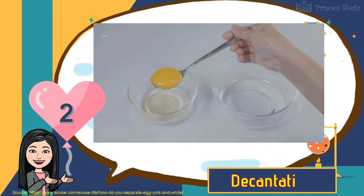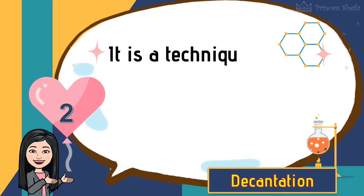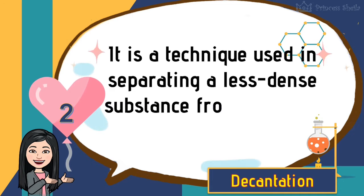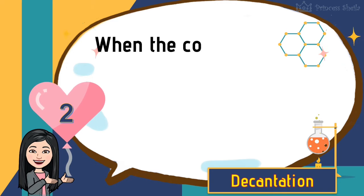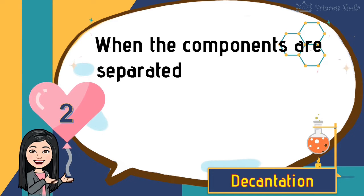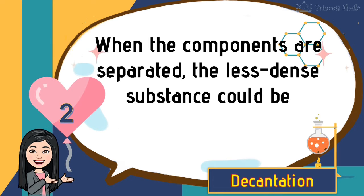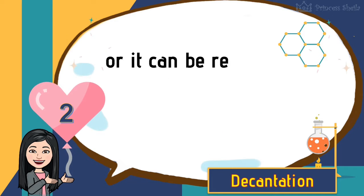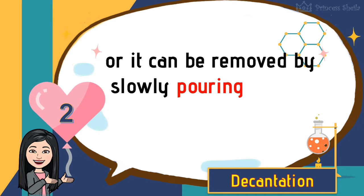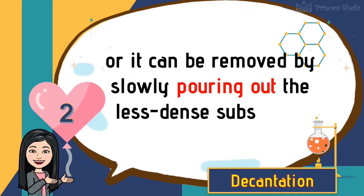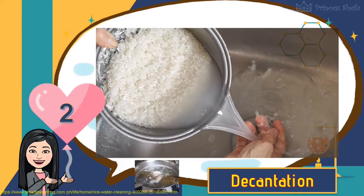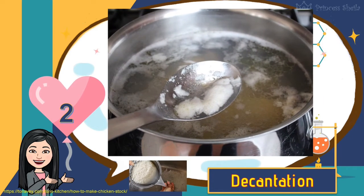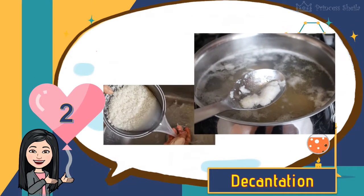Second is decantation. It is a technique used in separating a less dense substance from a denser one. When the components are separated, the less dense substance could be removed by scooping using a spoon, or it can be removed by slowly pouring out the less dense substance. You do it when you cook rice and when skimming off scum and fat on the surface of the broth or soup that you are cooking.